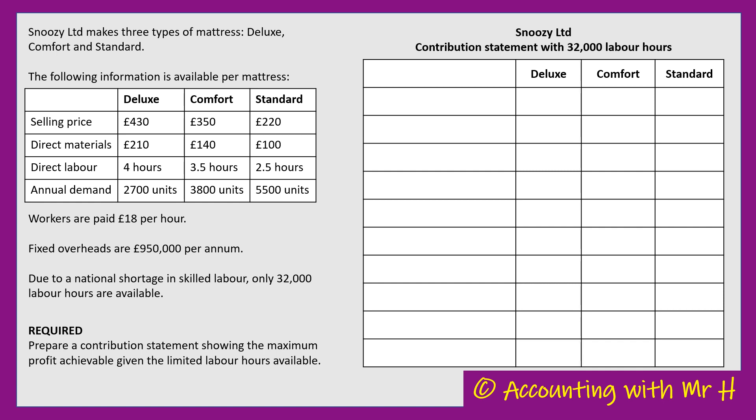I have a column for my narratives, and then a column for each of the different products: Deluxe, Comfort, and Standard. The first thing I'm going to do is calculate the contribution per unit per mattress, starting with the selling price. The Deluxe sells for £430, Comfort £350, the Standard £220.